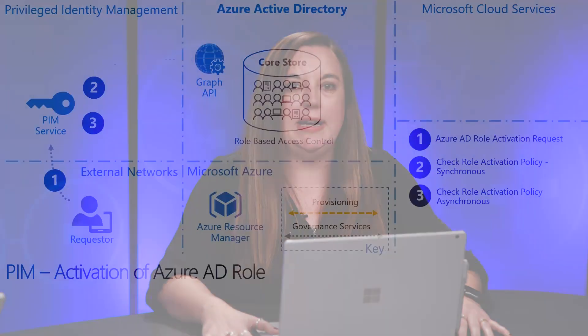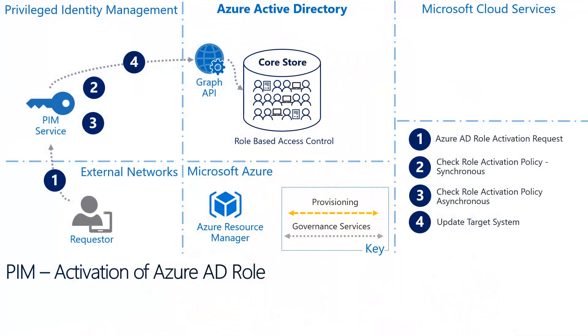Another example of a synchronous policy is time — if you're approved to activate a role for eight hours and you ask for nine, we'll reject you in real time so you can make the change. When our policies are satisfied, in step four, we update our internal PIM tracking database and the target system using Graph APIs. This is all done in one transaction. When I say target system, this is any system external to PIM that we're updating with our changes — Azure AD and Azure Resource Manager are examples of target systems. Once the update is complete in step five, we send back a notification, trigger any alerting, and generate additional logging.